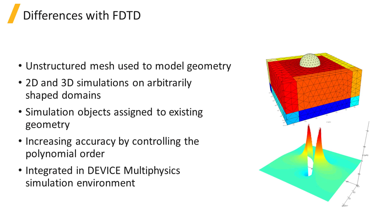On the other hand, DGTD differs from FDTD in several aspects. While FDTD uses a rectilinear mesh, DGTD uses an unstructured mesh to model the geometry.